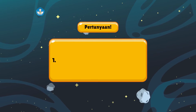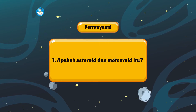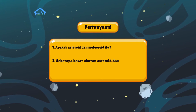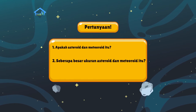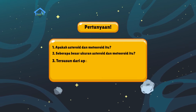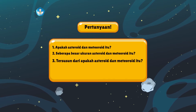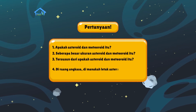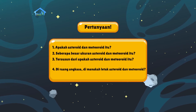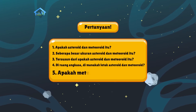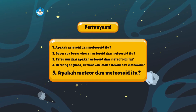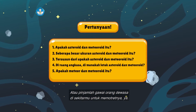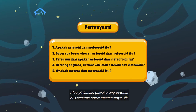Pertanyaan pertama: apakah asteroid dan meteoroid itu? Lalu, seberapa besar ukuran asteroid dan meteoroid itu? Ketiga, tersusun dari apakah asteroid dan meteoroid itu? Keempat, di ruang angkasa, dimanakah letak asteroid dan meteoroid? Terakhir, apakah meteor dan meteorit itu? Jangan lupa mencatat pertanyaan di layar pada buku kalian, atau pinjamlah gawai orang dewasa di sekitarmu untuk memotretnya ya. Selamat menulis!